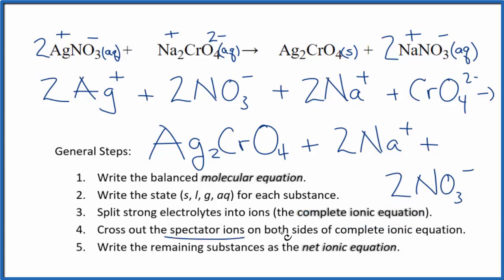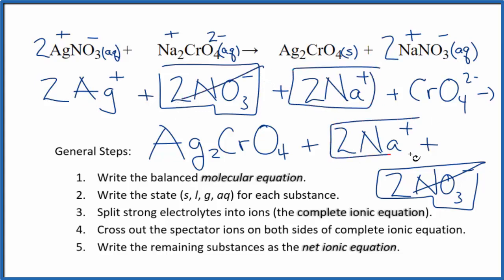Now we can cross out spectator ions. They're on both sides of the complete ionic equation. So we have our reactants here and then our products. I can see there are two nitrate ions in the reactants and two in the products. We can get rid of those. Two sodium ions here, again in the products. Get rid of those. These are spectator ions.